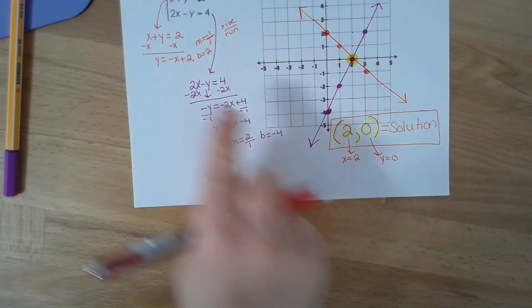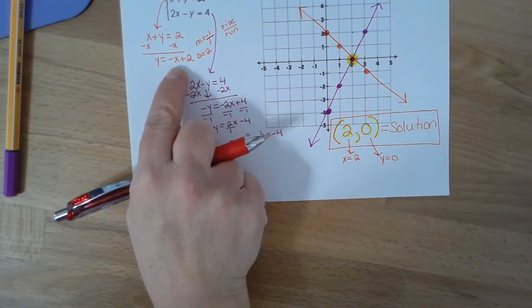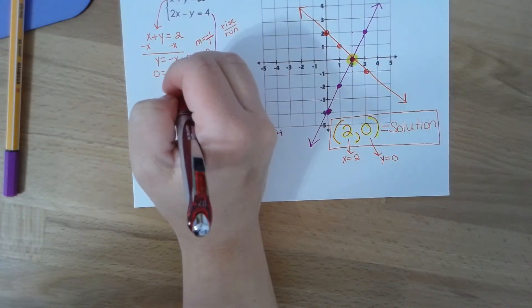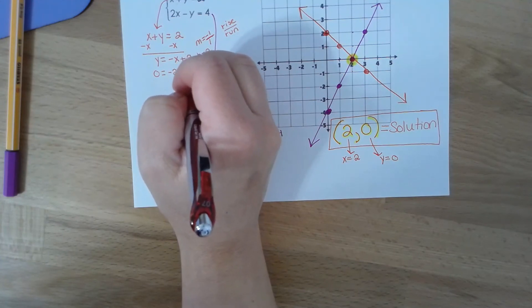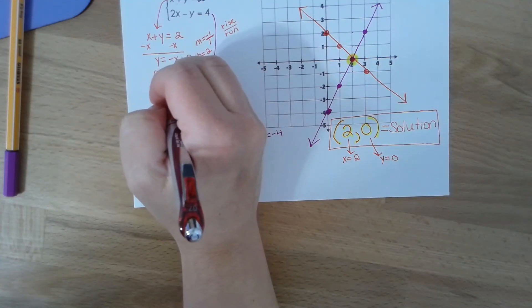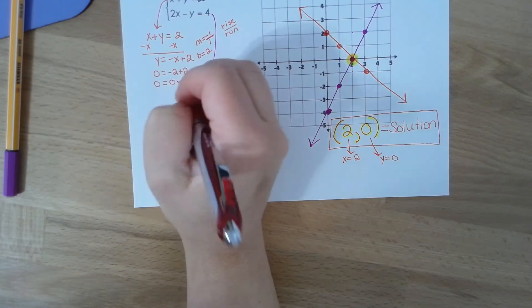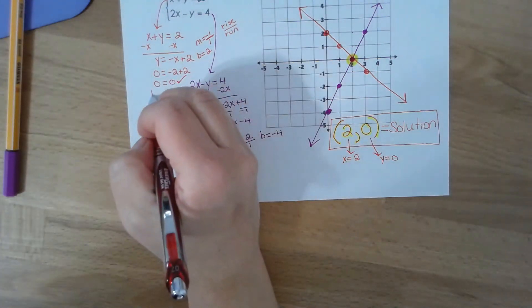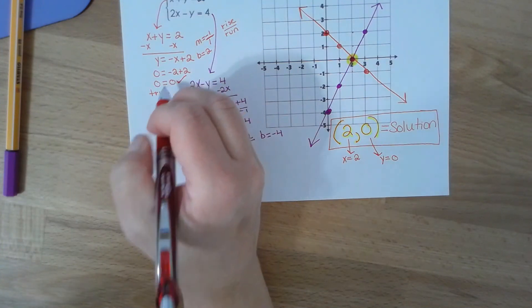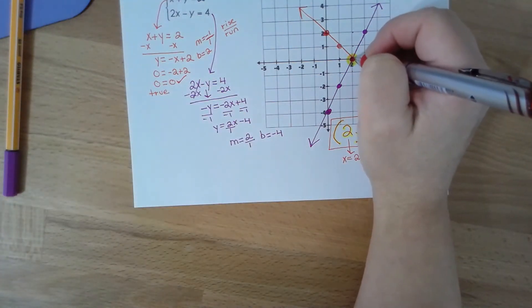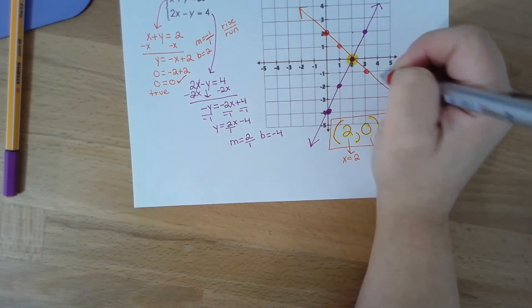If I plug in two for x and zero for y into both equations, so this becomes negative two plus two, you're going to simplify both sides. What do you notice? Both sides are equal. So that means that's a true statement. What does that really mean in algebra? Two comma zero is a point on my red line, which we kind of already know.